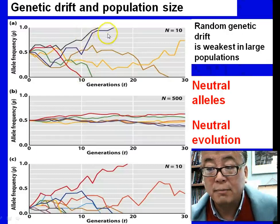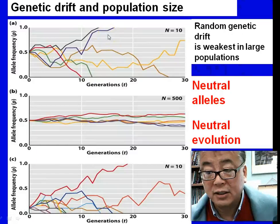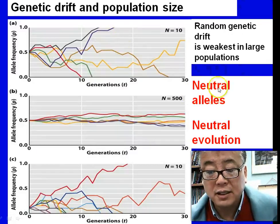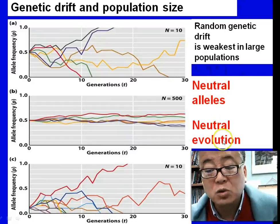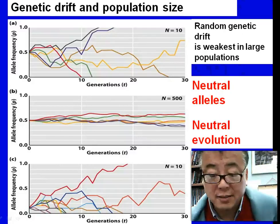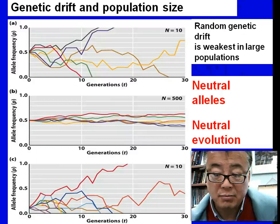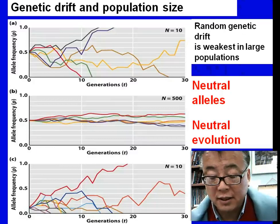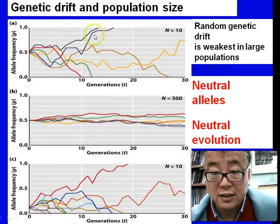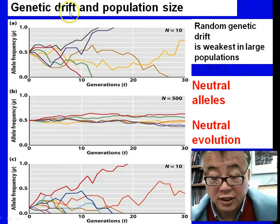If you have a smaller population over 30 generations, you can see the allele frequency varies significantly from low to high, which has a much greater impact on random drift. I want you to take a read and pay attention to the concept of neutral alleles and what neutral evolution is — a very new concept becoming more popular in population genetics, referring to genetic drift.